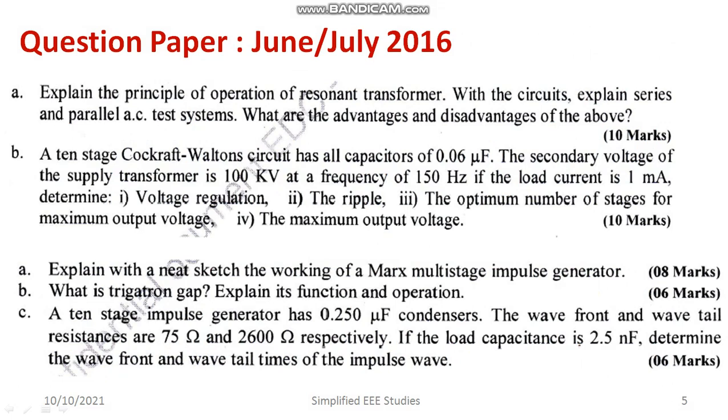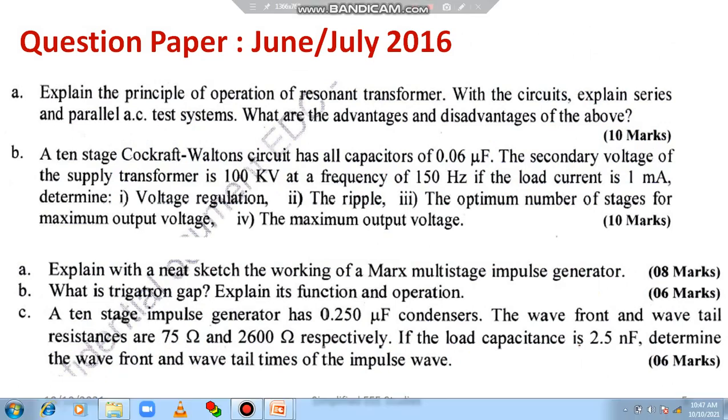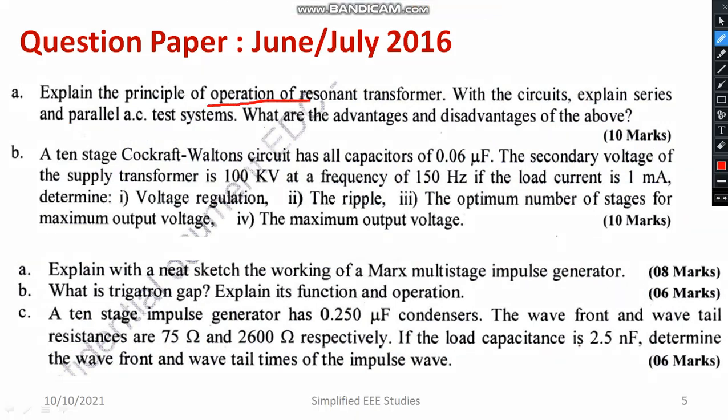Another important question I observed is the importance of the resonant transformer, where you have to explain the pros and cons. It carries a weightage of 10 marks. The principle of operation will get you 5 marks, and the remaining part — advantages and disadvantages — will earn the other 5 marks. So it is 5 plus 5, which equals 10 marks.